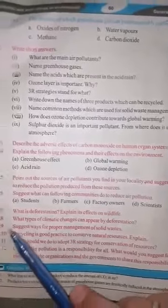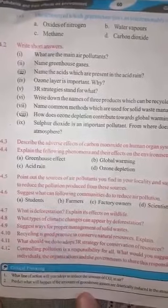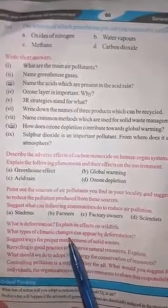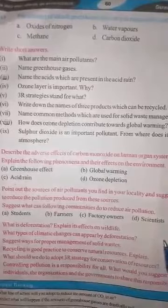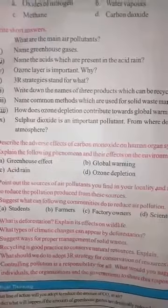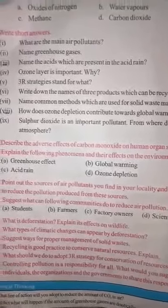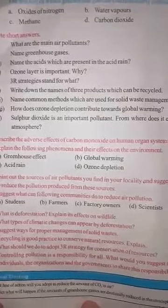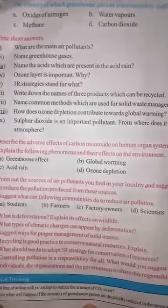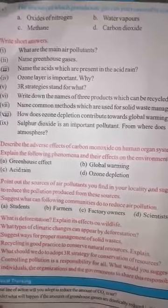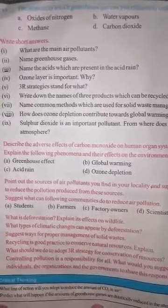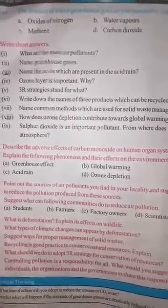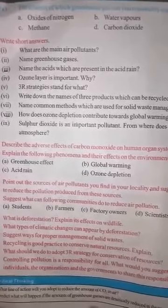Question number 4.6: suggest what the following communities can do to reduce air pollution — (a) students, (b) farmers, (c) factory owners, (d) scientists. You can write the answer in your own words. Here are some points on how students can help to reduce air pollution. Students can help by taking the following preventive measures.